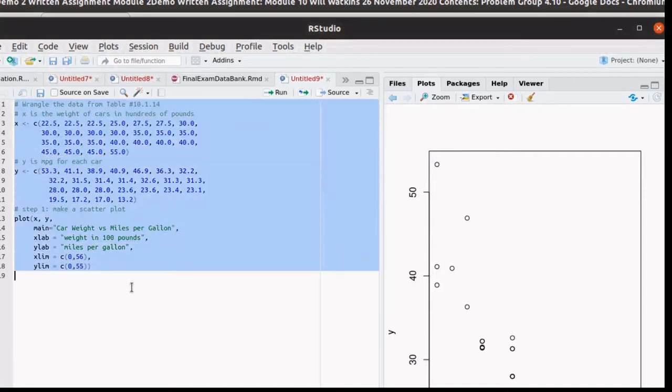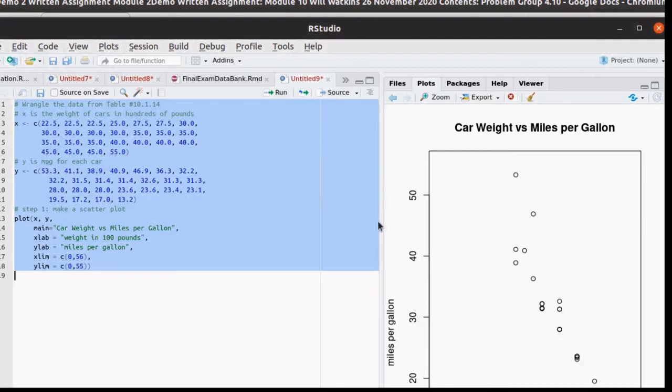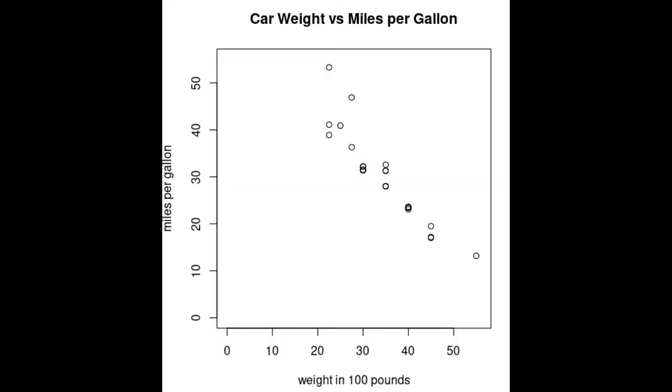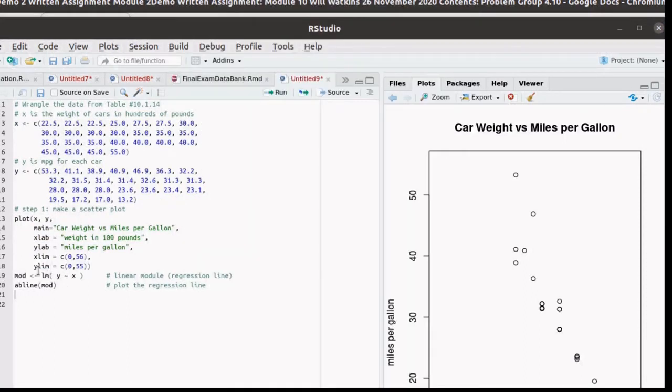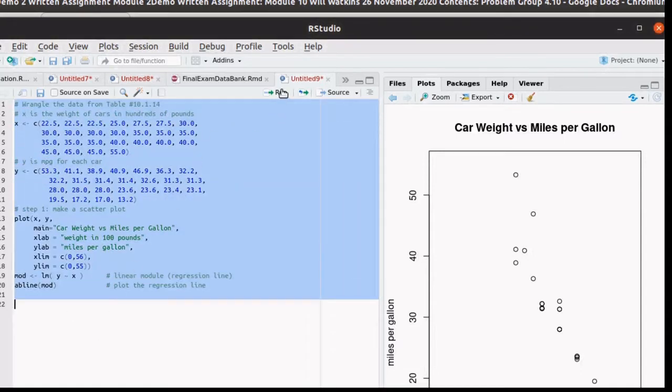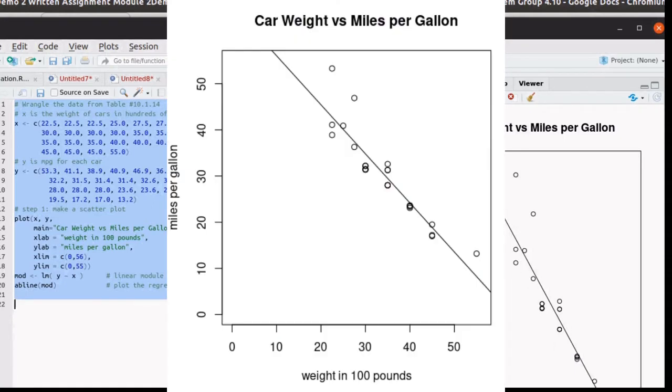So let's run that script and we get that result. Now I would also like to include the regression line there. To find the regression line, R has a powerful function called the linear model. I'm going to save the result of that linear model into mod. We'll use that later on as well. And we'll use the AB line to produce that regression line. So let's run that. So there's the best fit line on this data.